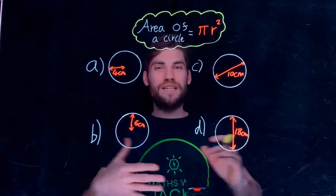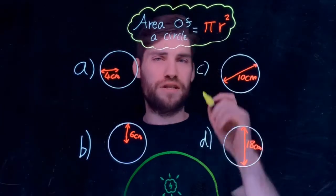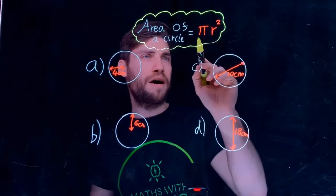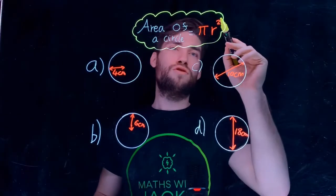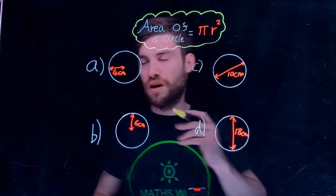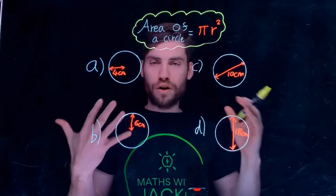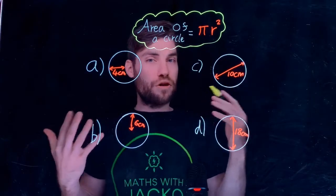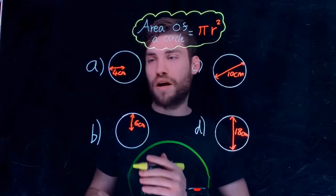Hello and welcome to Maths with Jacko. This video we're looking at area of a circle given by the formula π times the radius squared. R stands for radius. Here are four questions we're going to go through. We're going to leave our answers in terms of π and I'll show you what that means right now.